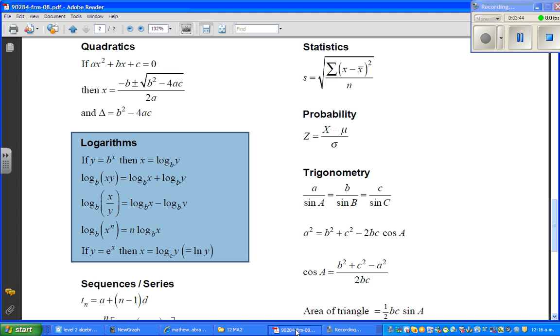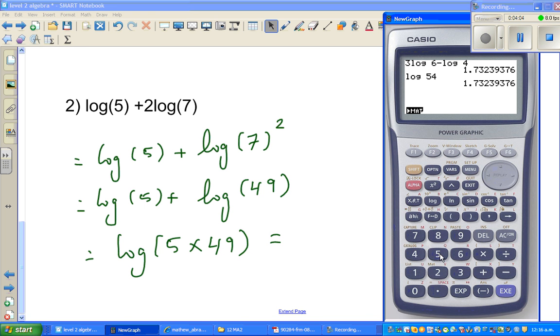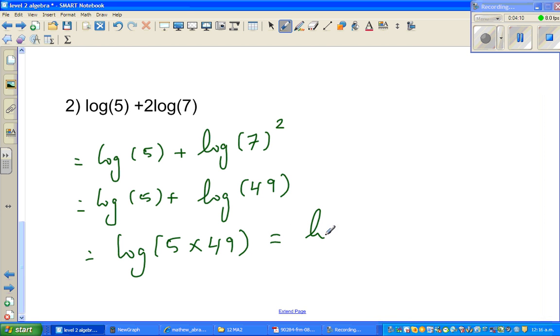So, again, going back to the formula sheet. Log of x plus log of y is log of x times y. So, applying that rule log of 5 plus log of 49 would be log of 5 times 49. Which is, of course, I need a calculator. 5 times 49 is 245. So, that is log of 245.